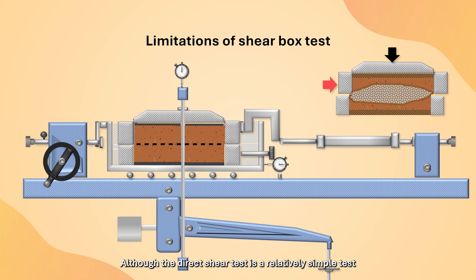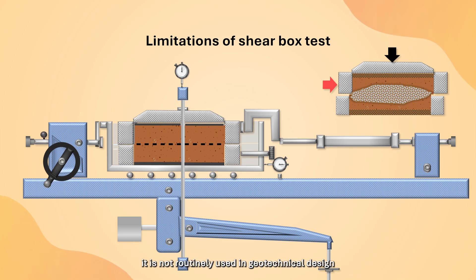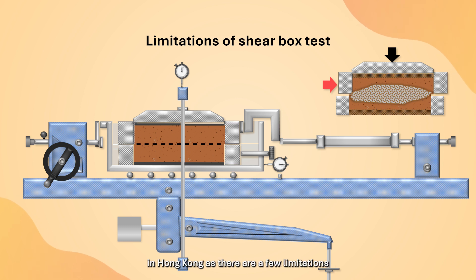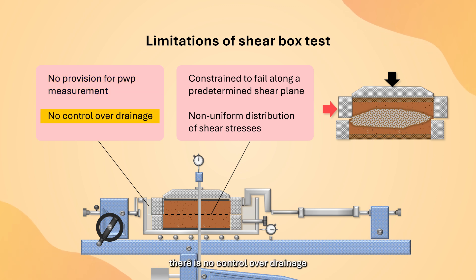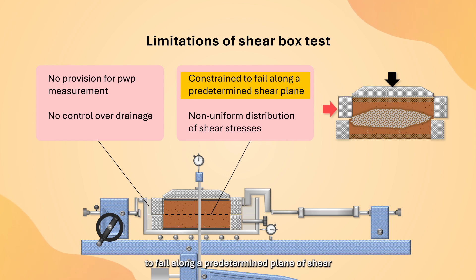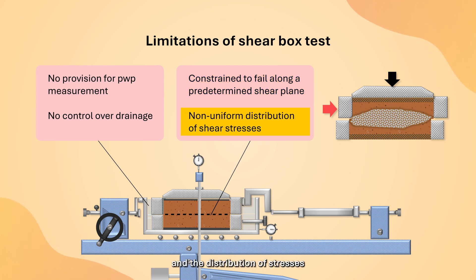Although the direct shear test is a relatively simple test, it is not routinely used in geotechnical design in Hong Kong as there are a few limitations. For example, there is no provision for pore water pressure measurement, there is no control over drainage, the soil specimen is constrained to fail along a predetermined plane of shear, and the distribution of stresses along the shearing surface is not uniform.